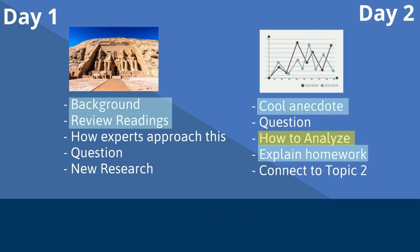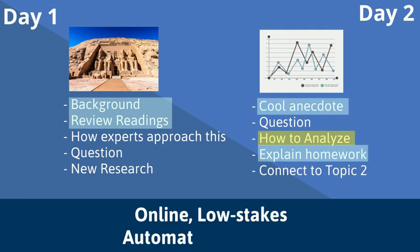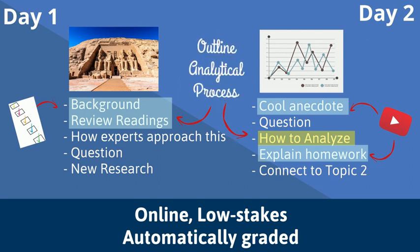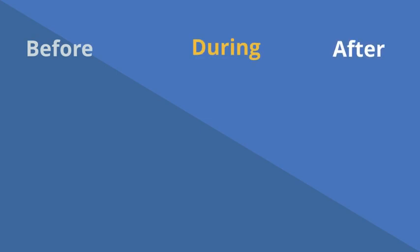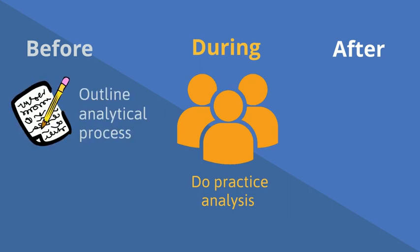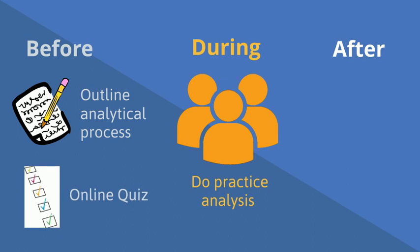To encourage students to do that homework, try creating online, low-stakes, automatically graded assignments. These should guide students through the material that you won't cover during class, help them self-check their learning, or give them something concrete to do in preparation for class activities. In this example, the instructor wants students to do a practice analysis in small groups during class. The study guide has students outline the analytical process, and the quiz focuses on key points that won't be covered in class. Both are due online before class and are automatically graded.